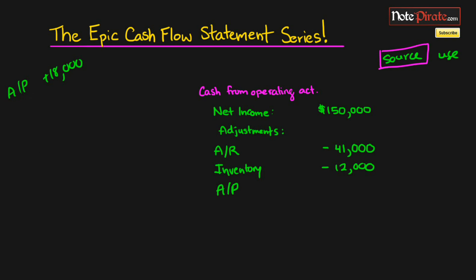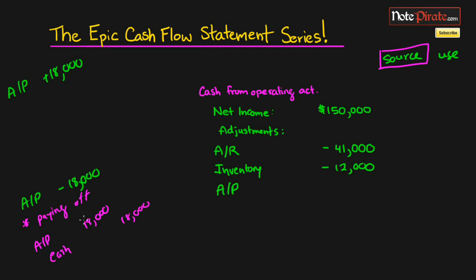It's probably easier to understand why it's a source by first explaining why it would be a use if accounts payable goes down. If accounts payable decreases by $18,000, it's normally because we're paying off our obligations. In that case, accounts payable is debited — since its normal balance is a credit — and we credit cash by $18,000. That's why a decrease in this current liability is a use of cash.